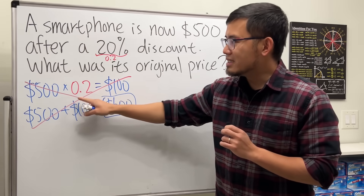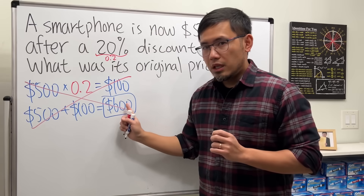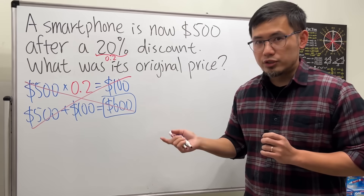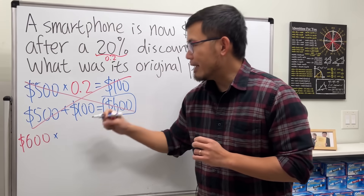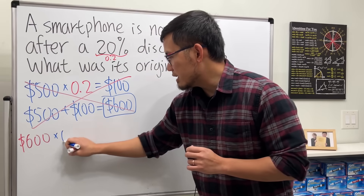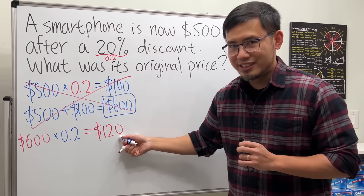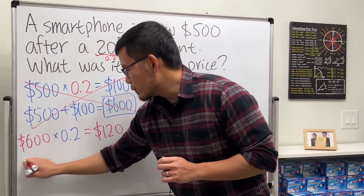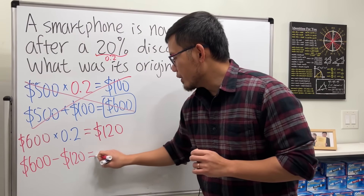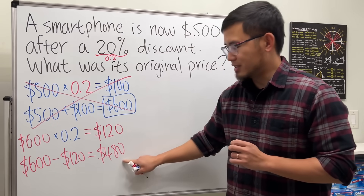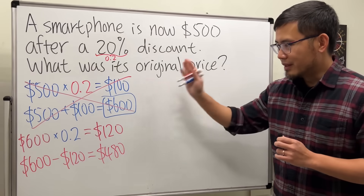Another way to look at this: if you take $600 as the original price and multiply by 20% — which is 0.2 — you will end up with $120. Then if you start with the original $600 and subtract the $120, you will end up with $480. This is not the same as the $500 we are looking for, so this is not correct.